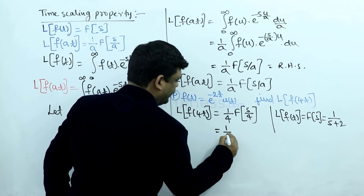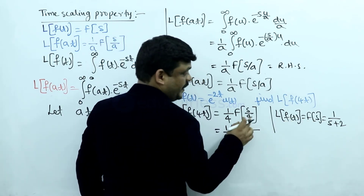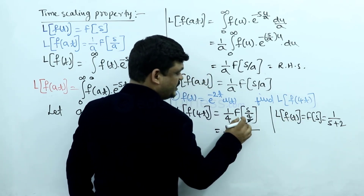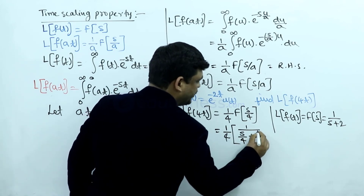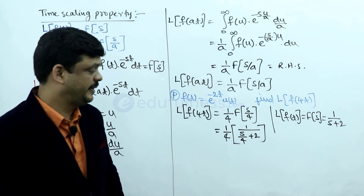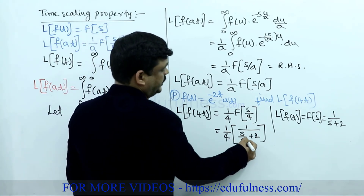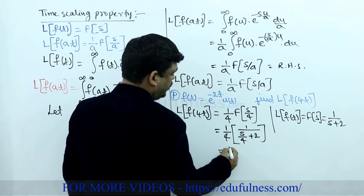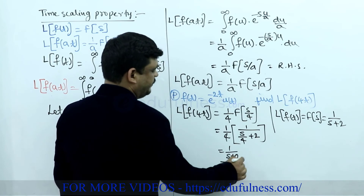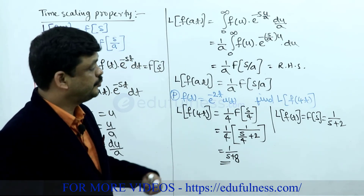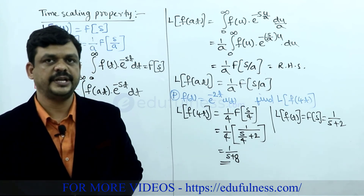So the result is (1/4) · 1/(s/4 + 2). Taking 4 as common in the denominator, the 4s cancel, and it becomes 1/(s + 8). This is the final answer. Time scaling property is used to find the Laplace transform of signals of this type.